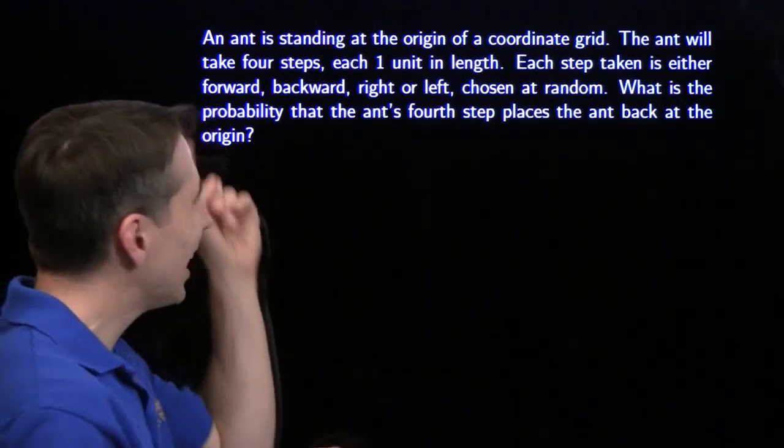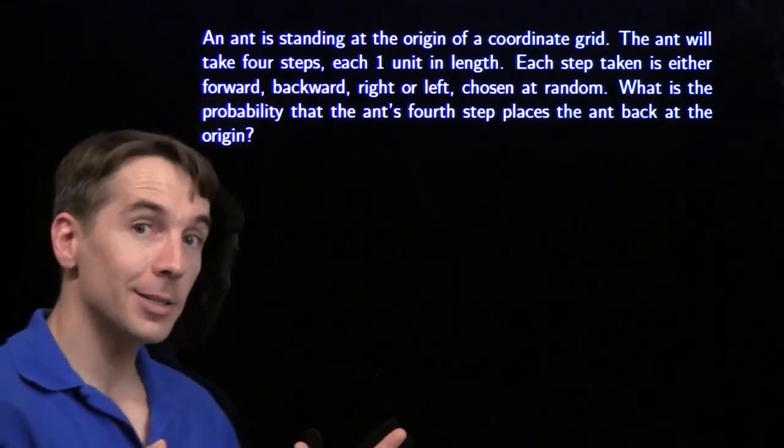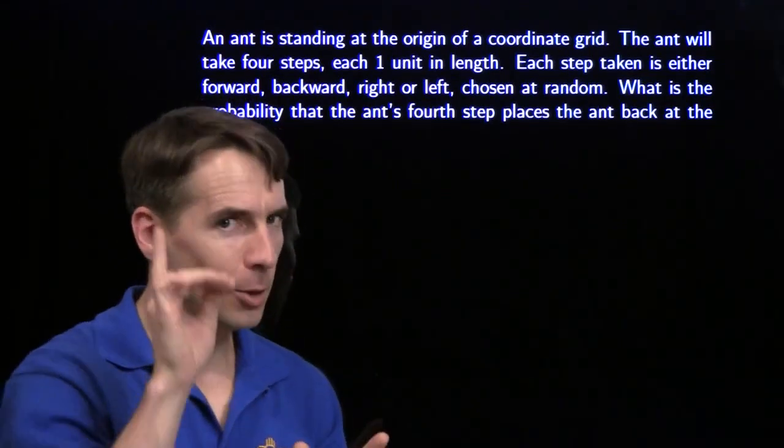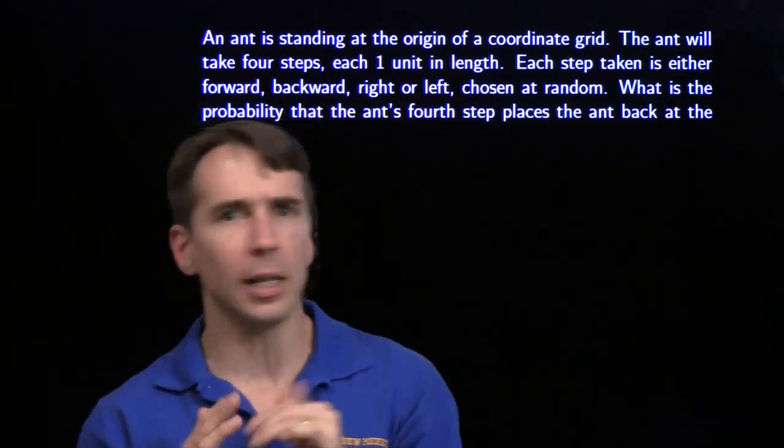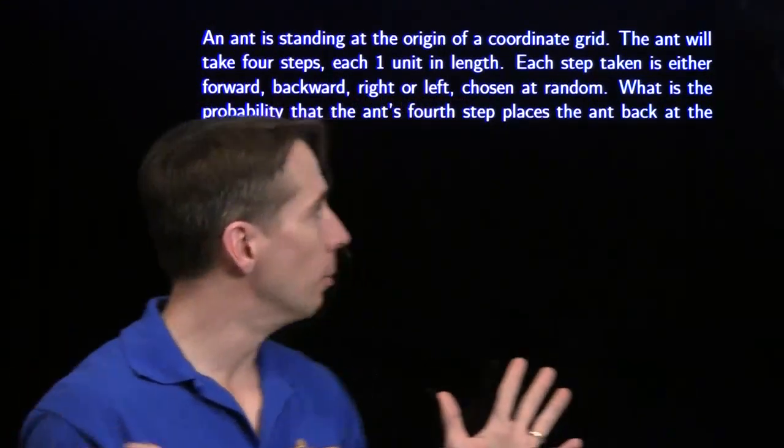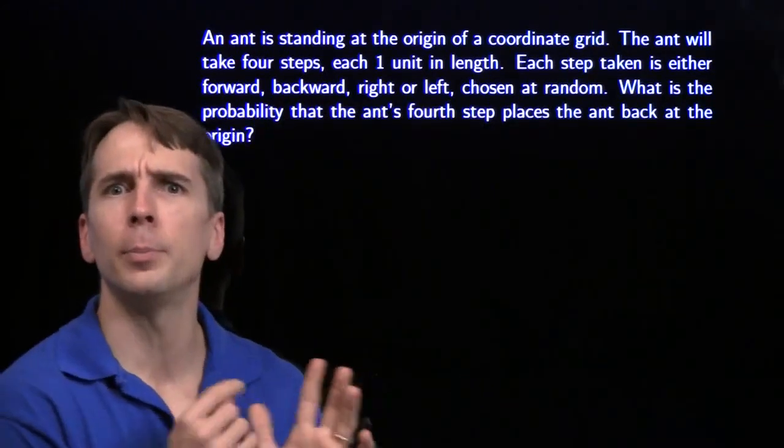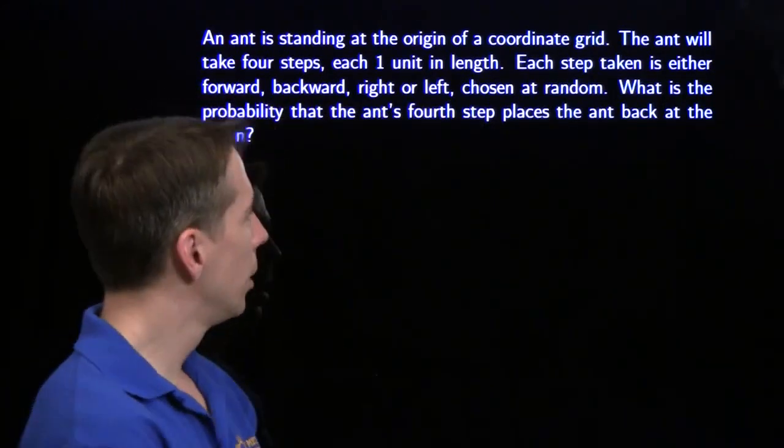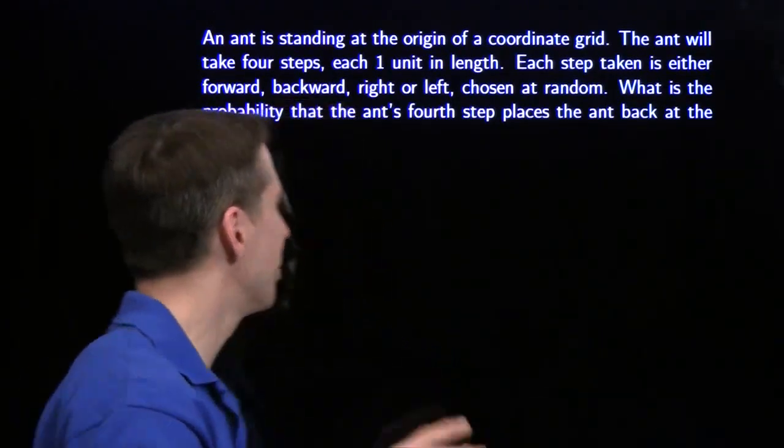And for our last problem we have an ant standing at the origin of a coordinate grid. And the ant's going to take 4 steps, one at a time. Each is one unit in length, and each is going to be forward, backwards, right, left, chosen at random. We want the probability that after 4 steps, the ant's right back home, right back where the ant started. Well we know how we're going to analyze this, one step at a time, that's right.